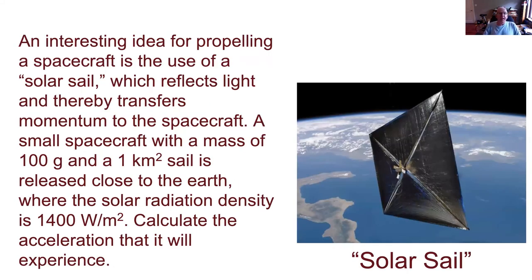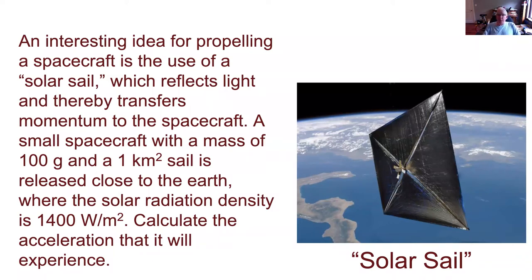An idea that's more like engineering is the notion of the solar sail as a way to propel a satellite or small space vehicle. This is something that's been considered a lot — to the best of my knowledge it's never been successfully deployed, but the picture shown is an artist's drawing from a NASA website. The solar sail has a large panel made of something like mylar that can absorb or reflect incident radiation. It wants to be big so that it catches lots of photons moving through space.